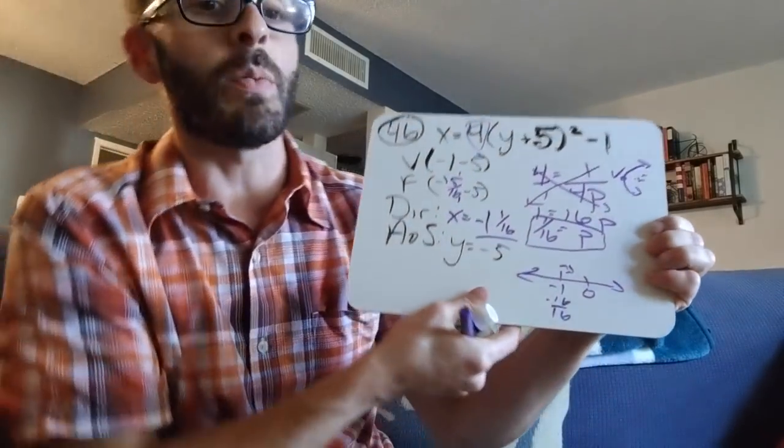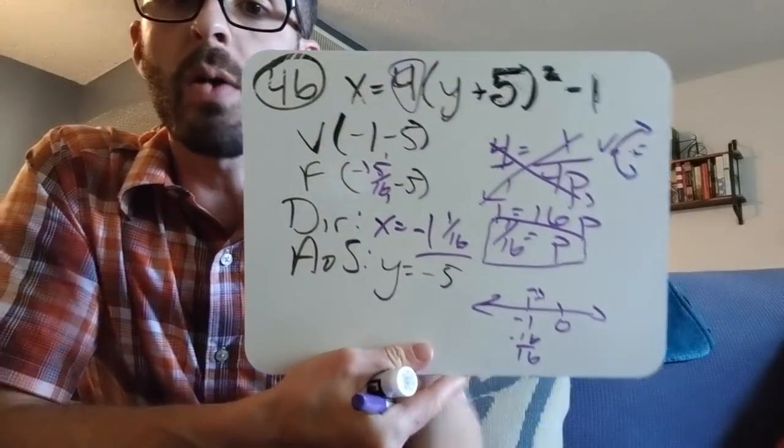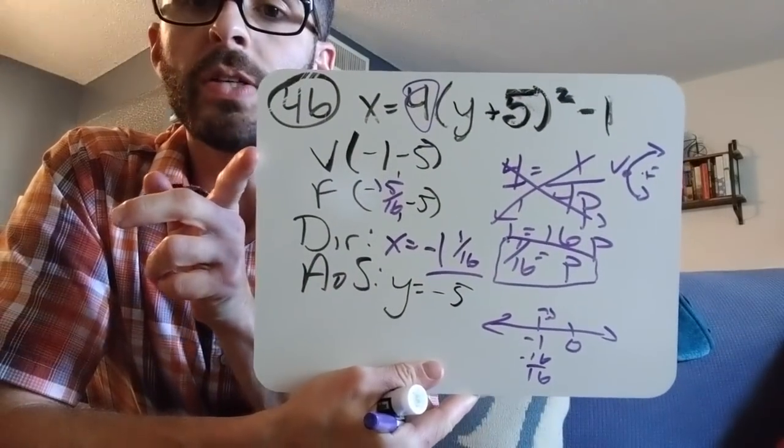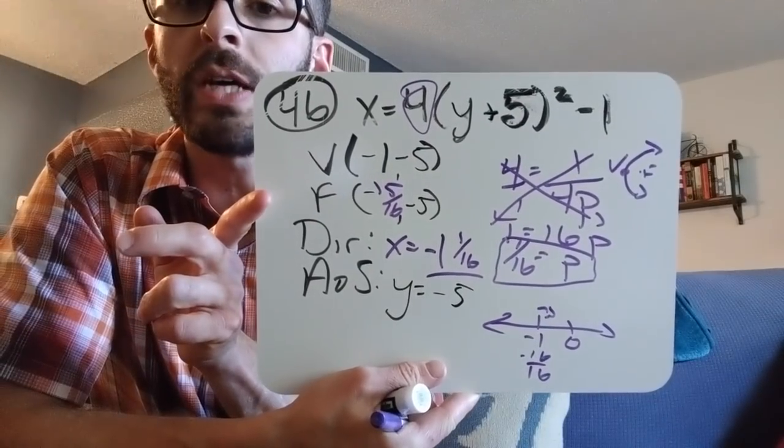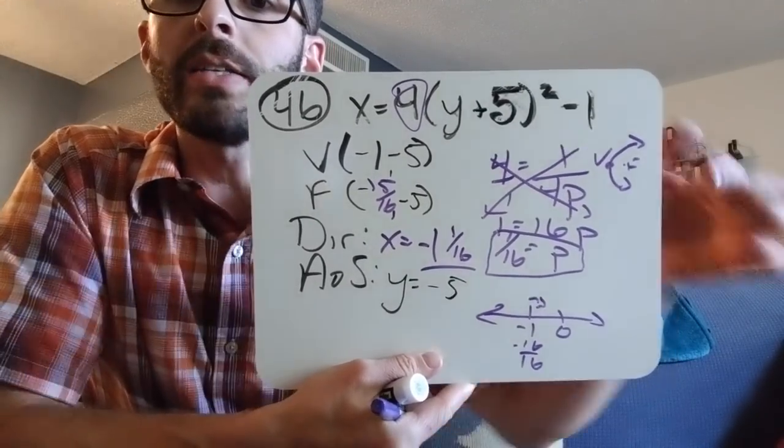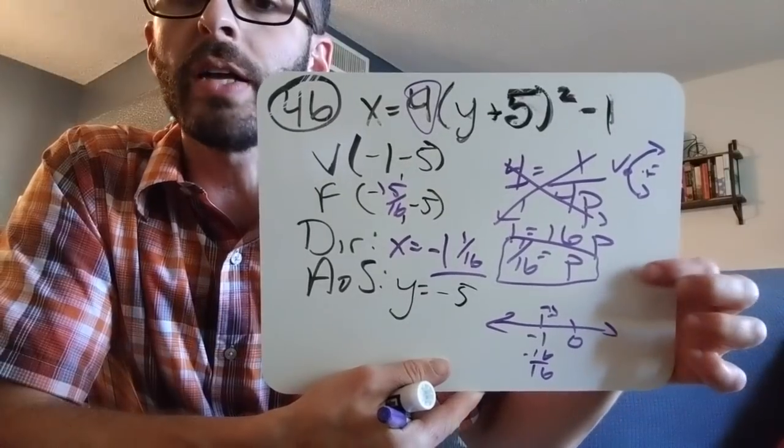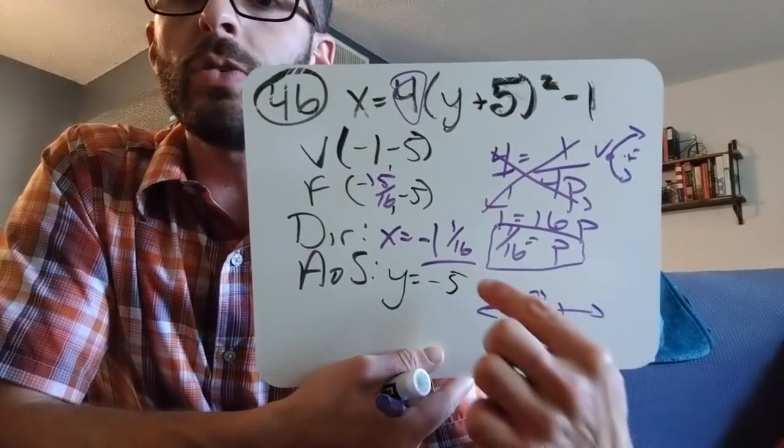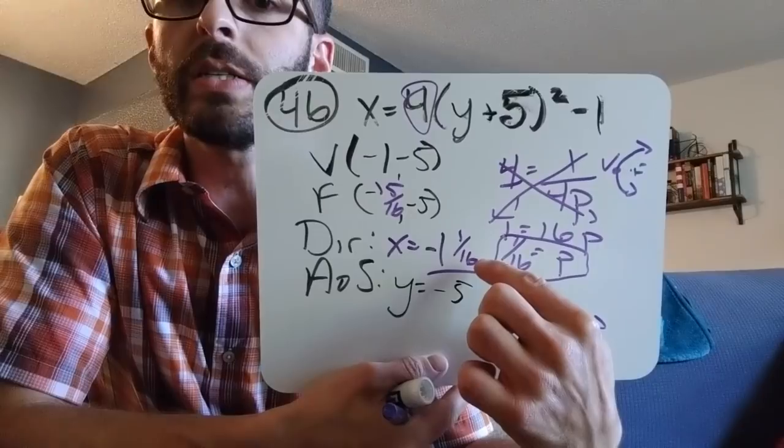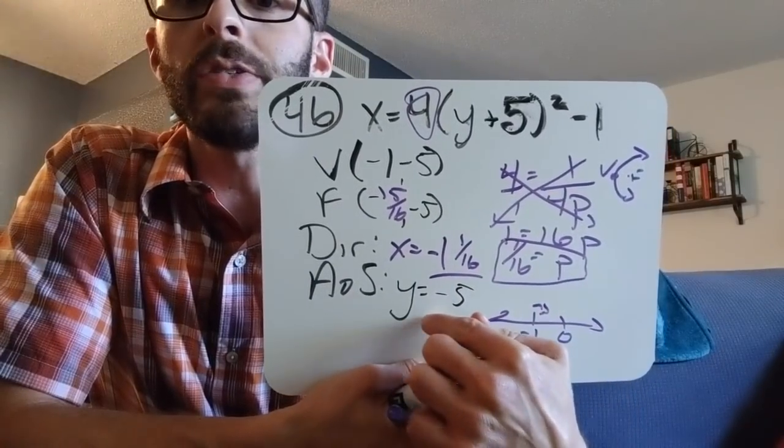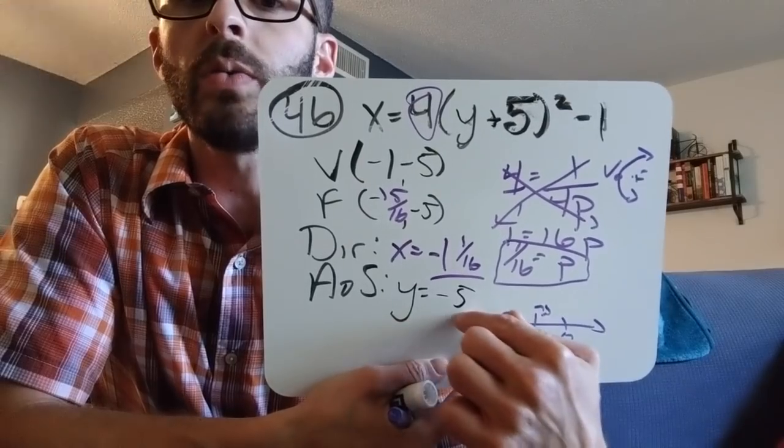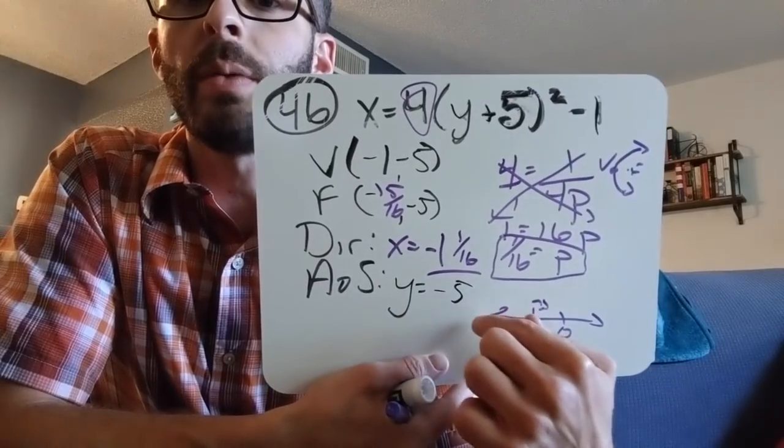All right. Again, you might want to stop. You might want to think about what we did. How did we find the vertex? How did I find the focus? In fact, in the focus, what changed from the vertex? All right. I still had to use this p to find my focus. What did I do differently to find my directrix? And then finally, same old axis symmetry, but this is new for this section. So it's y equals, and it's still this number right here.